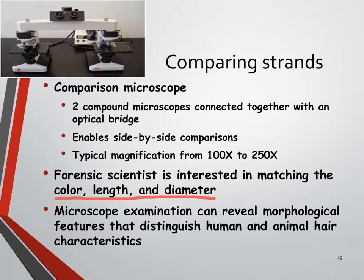Now that we know some background information about hair, let's talk about its application to forensics. The first thing you want to do after collecting your sample is compare it. If we have suspect samples or known samples, we want to compare those to our crime scene sample. The tool we use is called a comparison microscope — it looks like two regular microscopes attached to each other by a bridge. When you look through the eyepieces, your right eye sees what's on the right scope and your left eye sees what's on the left scope, so the samples line up side by side.